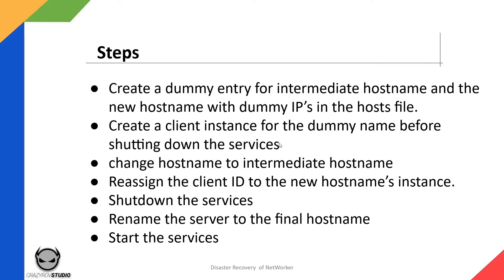You also need to have an entry in your hosts file — map the IP address of the NetWorker server to the dummy hostname. Make sure you put an entry in /etc/hosts for Linux. For Windows, you will have to go through a reboot as there is no alternative. Next, change the hostname to the intermediate hostname, reassign the client ID of the old NetWorker client instance to the new client instance, shut down the services again, rename the server to the final hostname, start the services, and you are good to go.